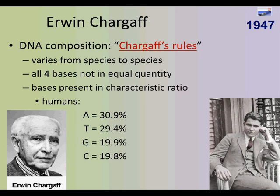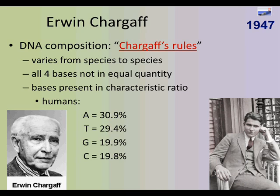A gentleman named Chargaff was really responsible for coming up with DNA's composition — what we call Chargaff's rules. We see that the composition varies from species to species; not all four bases are in equal quantities. However, the bases do present a characteristic ratio: the amount of A's is very similar to the amount of T's, and the amount of G's is very similar to the amount of C's. A stands for adenine, T for thymine, G for guanine, and C for cytosine — our nitrogenous bases of DNA.